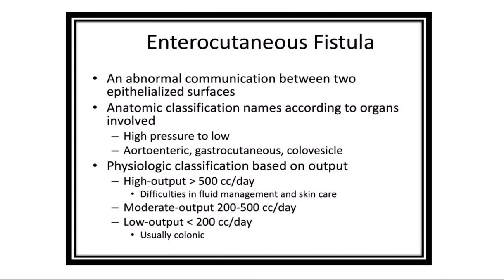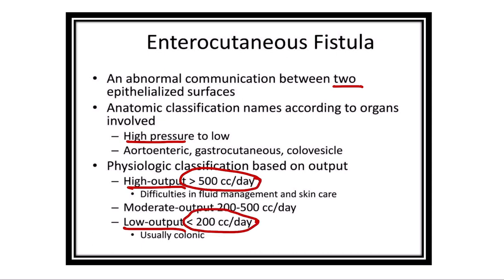It is an abnormal communication between two epithelial surfaces. This enterocutaneous fistula is divided into two types: one is high output and another one is low output. In case of high output, per day secretion is more than 500 ml, and in case of low output, per day secretion is less than 200 ml.